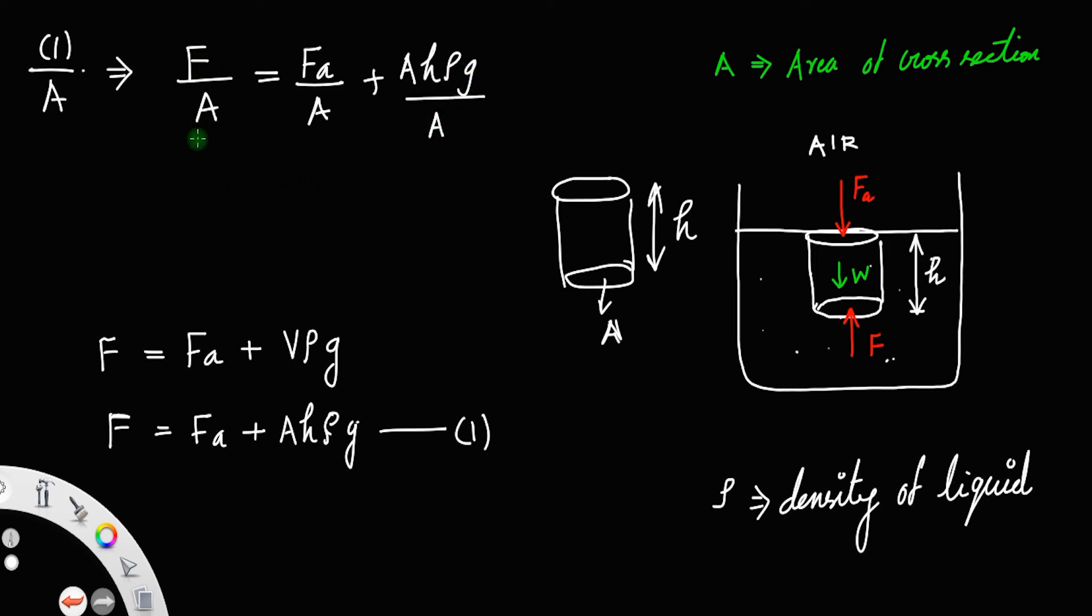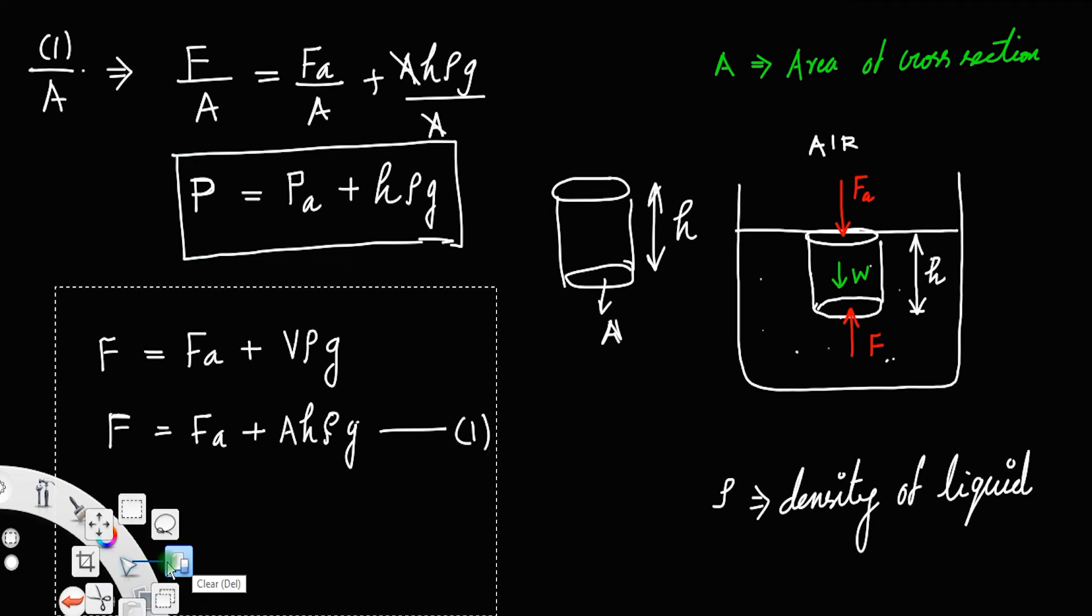Force per unit area equals pressure. Force of the air per unit area is the atmospheric pressure P_a. Canceling the A's, we get P equals P_a plus h rho g. This is the expression for pressure at a depth due to a liquid column.